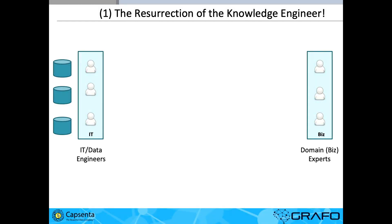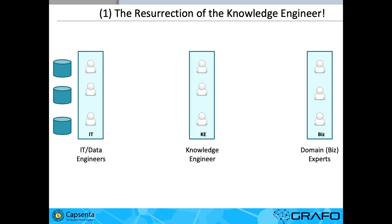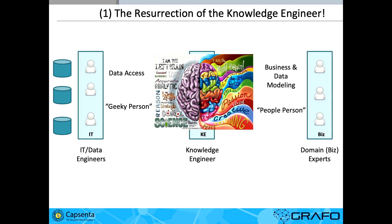So let's resurrect the knowledge engineer. Who is the knowledge engineer? It's somebody in the middle between the business user and IT. From a hard skills perspective, they know how to access data, know SQL, know scripting, and they know business modeling — how to draw conceptual graphs. From a soft skills perspective, they're geeks with geeks and people-persons with business users. The best knowledge engineers are people who have a background in computer science with dual degrees in English and philosophy, or are musicians.